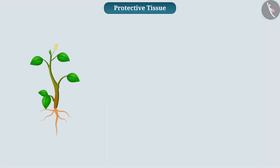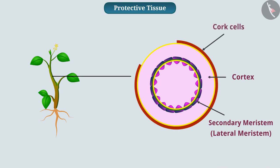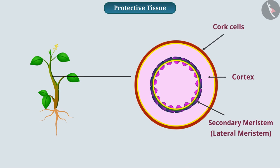The aging of a plant changes its external protective tissue. For example, a layer of secondary meristem — that is lateral meristem — is present in the cortex of the stem, which forms the layer of cork cells. These cells are dead and do not have intercellular space between them, and their cell wall contains a chemical substance, suberin, that makes plants air and water resistant.